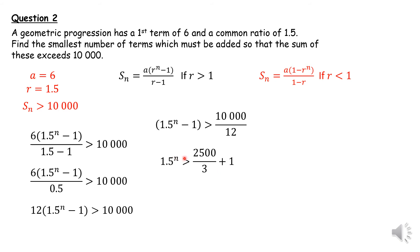Once I'm here, you're looking for the index, so you have to use logarithms. I'm going to take log of both sides. When I do that, I'll get n times log 1.5 greater than log of 2,503 over 3. Now I'm going to divide by log of 1.5. If the log was a fraction like 0.2 or 0.5, the inequality sign would have changed.